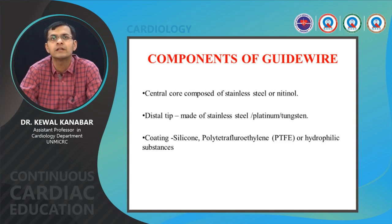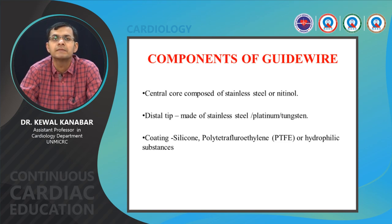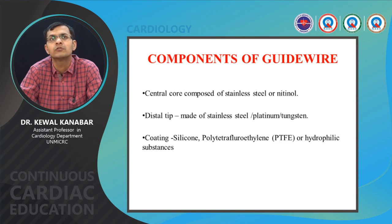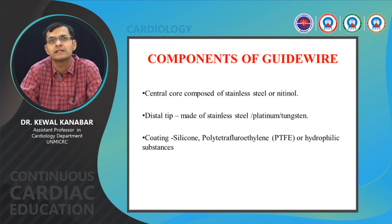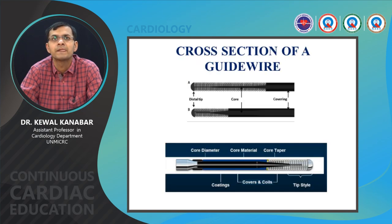The components of the guide wire: there is a central core which may be made up of either nitinol or stainless steel. There's a distal tip which may be made up of stainless steel, platinum, or tungsten. There's a coating on the central core — either a silicone coating, a PTFE coating, or a hydrophilic coating. Depending on the type of coating used, we have different types of guide wires with varying uses and advantages. This cross-section shows the central core, the coating, and the distal tip.